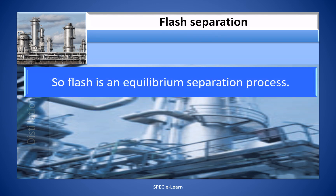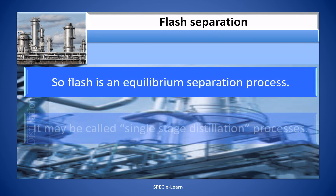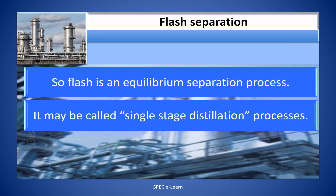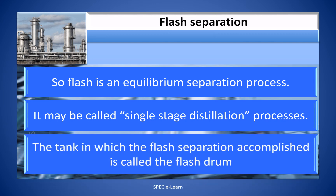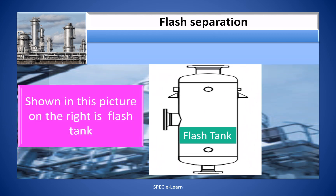Flash is an equilibrium separation process. It may be called a single-stage distillation process. The tank in which the Flash separation is accomplished is called the Flash drum. Shown in this figure on the side is a picture of a Flash tank.